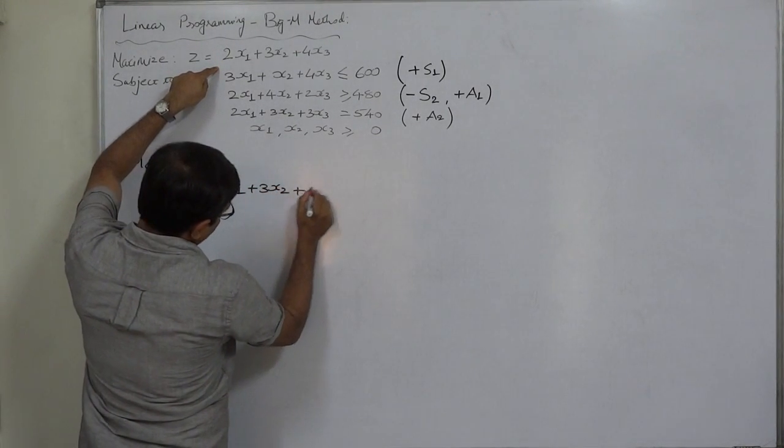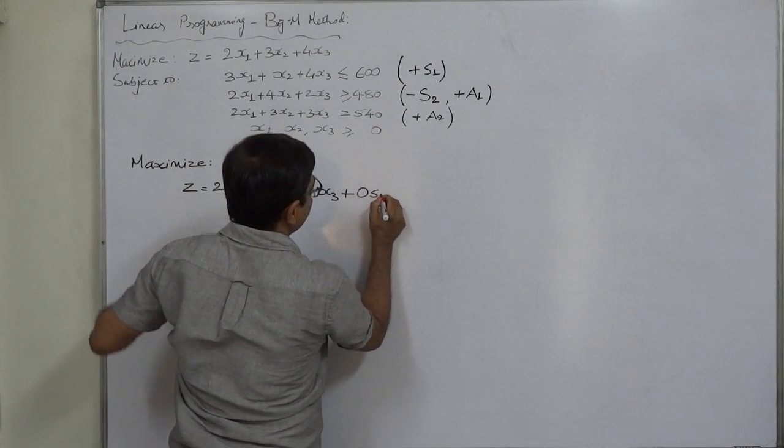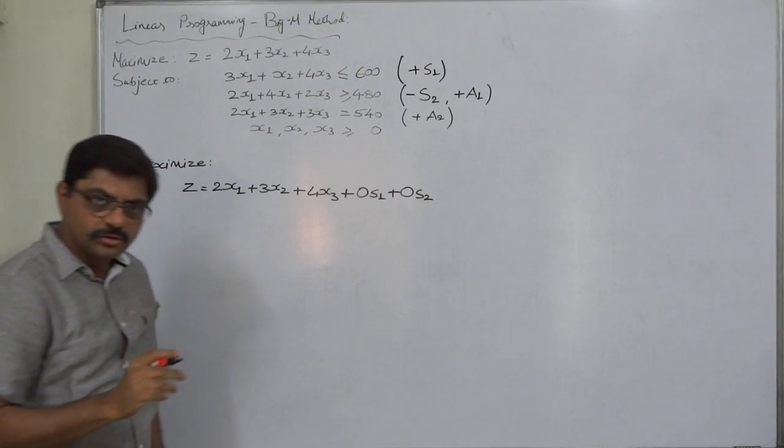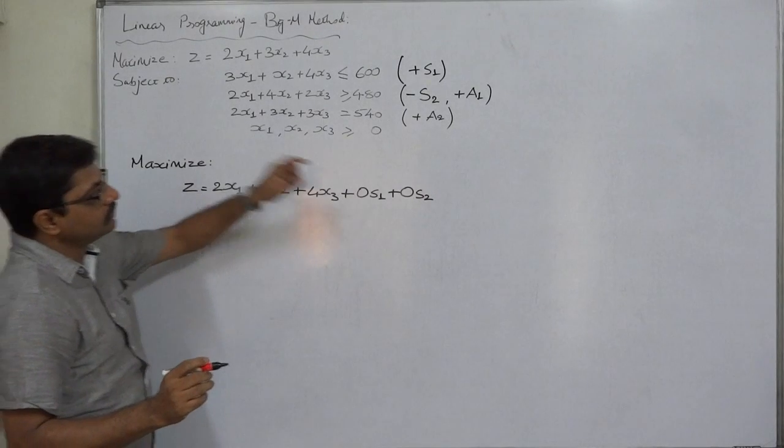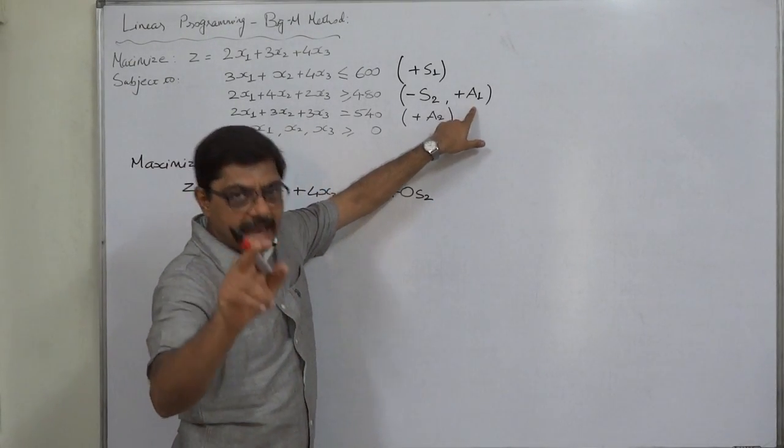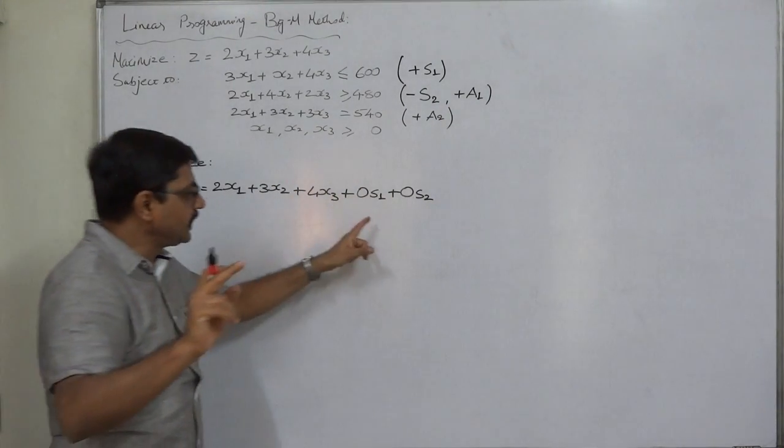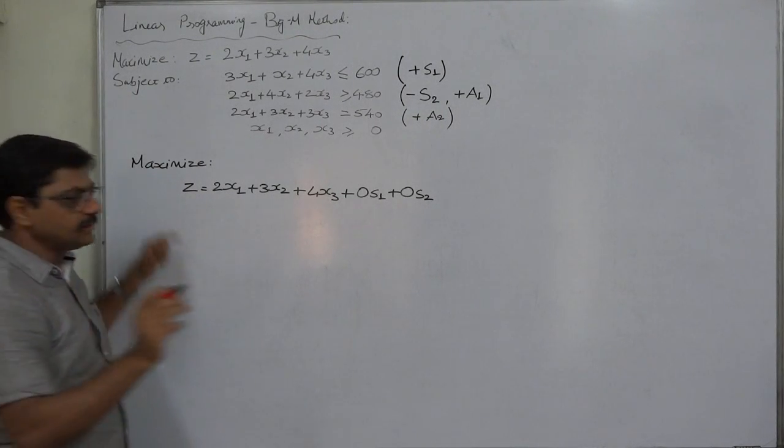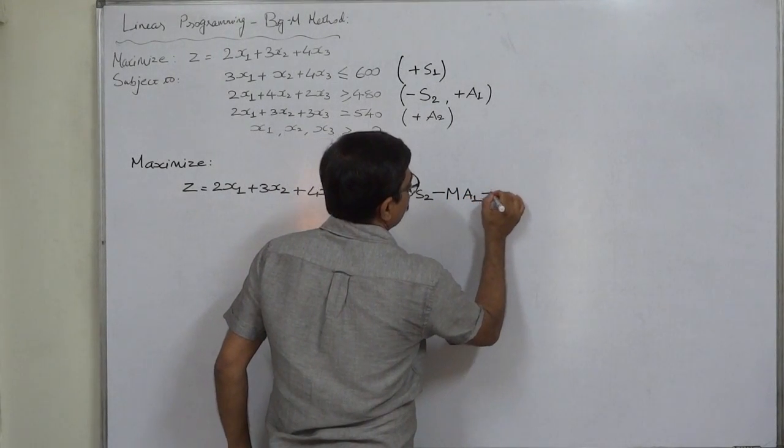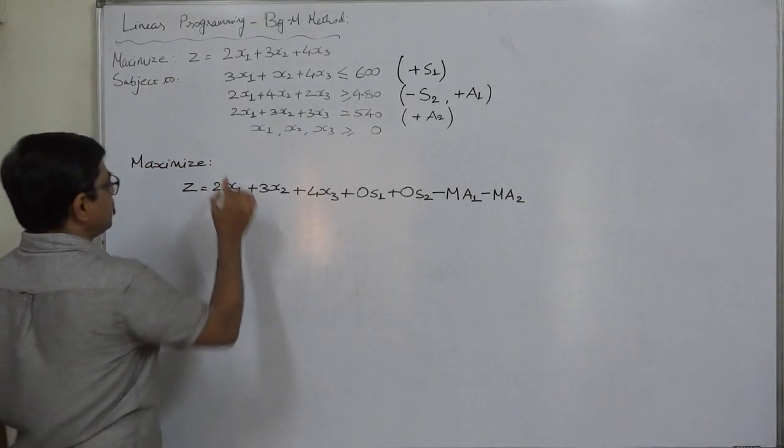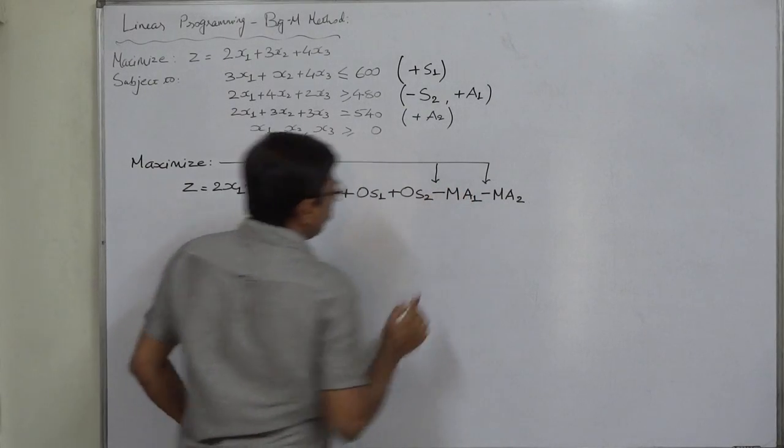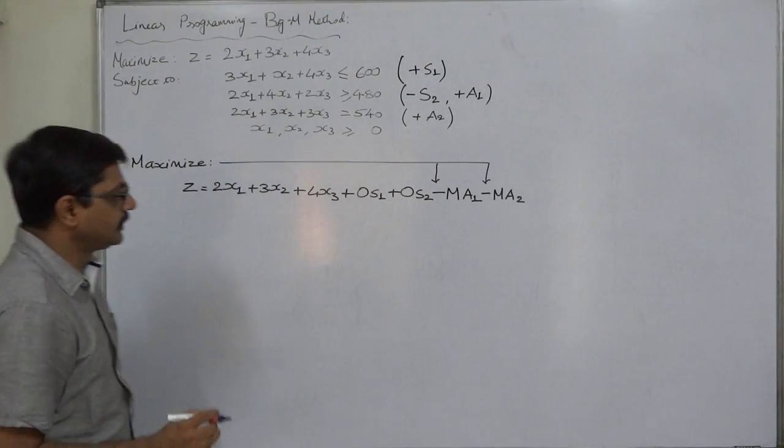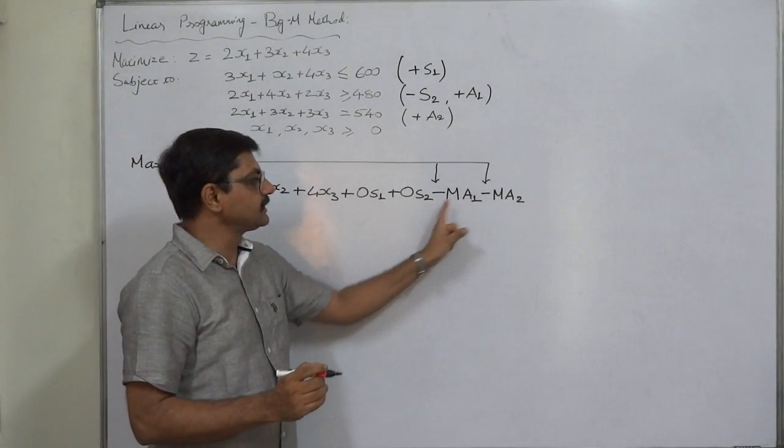Maximize z equals 2x1 plus 3x2 plus 4x3 plus 0S1. The coefficient of slack variable is always 0. Now the coefficient of artificial variable is always M, but the sign of M in objective function is directly dependent on the objective. In this case the objective is maximization, so the sign will be negative. A very small thing but very important: if by mistake we take positive sign here, the problem will be on the wrong track right from inception.